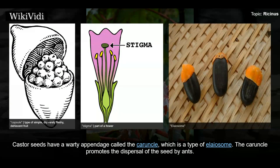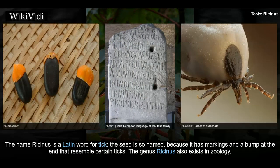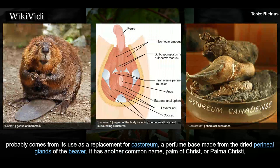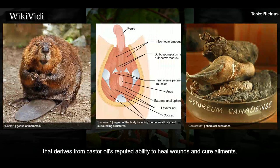Castor seeds have a water appendage called the caruncle, which is a type of elaiosome; the caruncle promotes the dispersal of the seed by ants. The name Ricinus is a Latin word for tick — the seed is so named because it has markings and a bump at the end that resemble certain ticks. The common name castor oil probably comes from its use as a replacement for castoreum, a perfume base made from the dried perineal glands of the beaver. It has another common name, 'palm of Christ' or 'palma Christi,' which derives from castor oil's reputed ability to heal wounds and cure ailments.